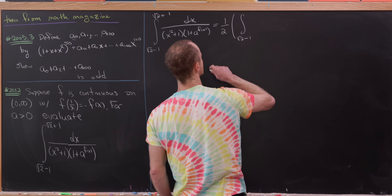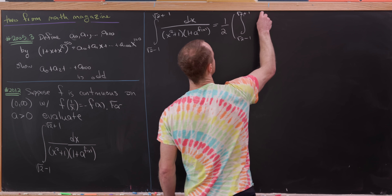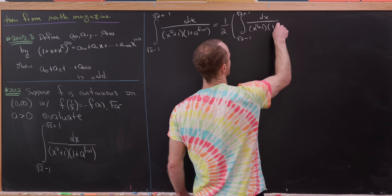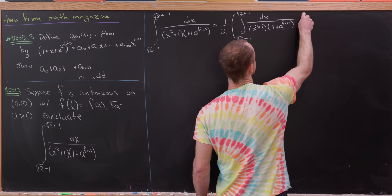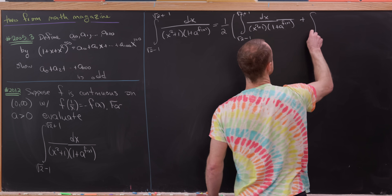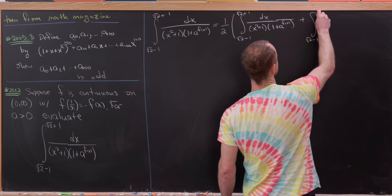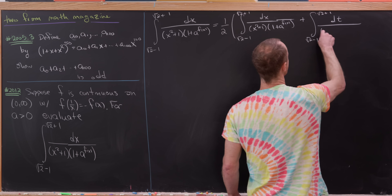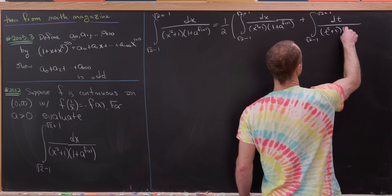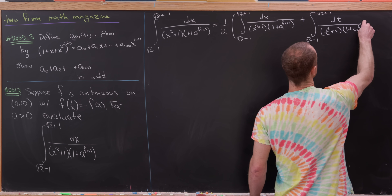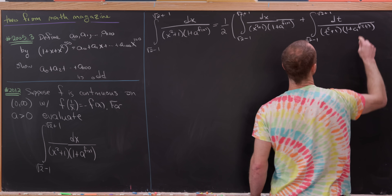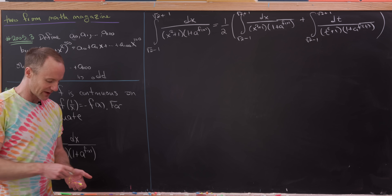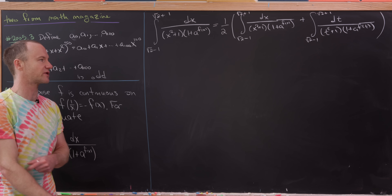The first copy is the integral from √2 − 1 to √2 + 1 of dx / ((x² + 1)(1 + a^(f(x)))). For the second copy, I change the dummy variable to t: the integral from √2 − 1 to √2 + 1 of dt / ((t² + 1)(1 + a^(f(t)))). I change the variable because I'm about to make a substitution.